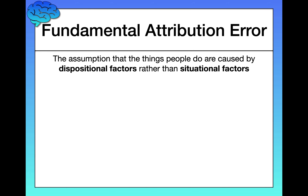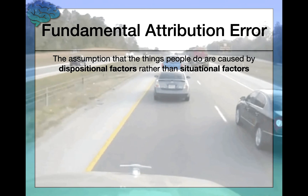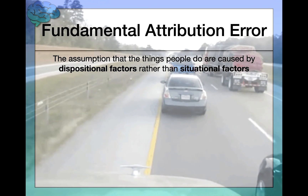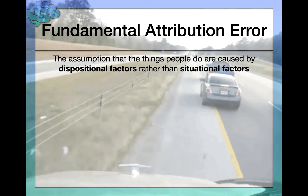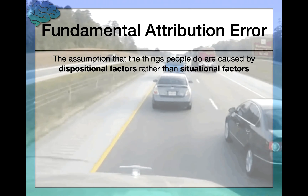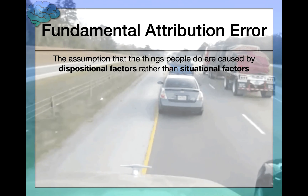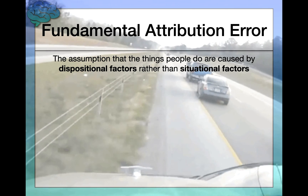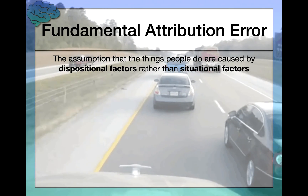For example, what do you think of when you observe someone causing a car accident? Most people's immediate assumption is that this person is a careless person or perhaps a bad driver. We're explaining the person's behavior using only dispositional factors. But it's quite possible that this person is actually a great driver who was in a rush because he just found out his wife is in the hospital. This would be a situational explanation, but our minds don't tend to go there right away.